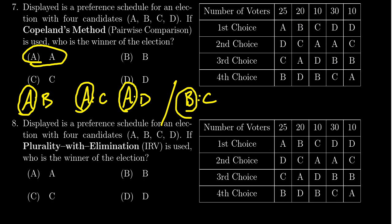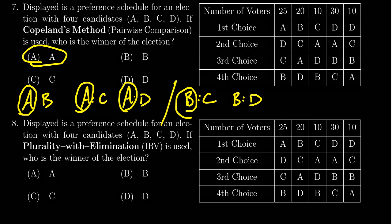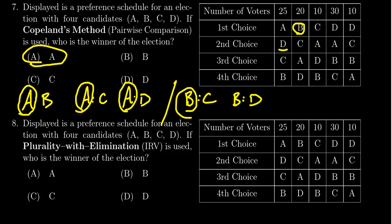If you do B versus D. So D is preferred. Then here is B is preferred. D is preferred. D, D. So D is definitely the winner there. We only got 20 votes in preference. So D won that one.